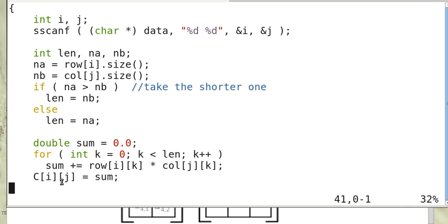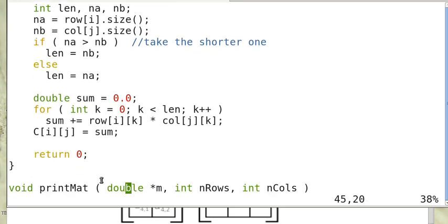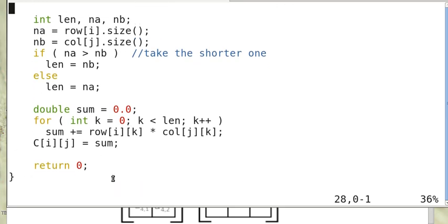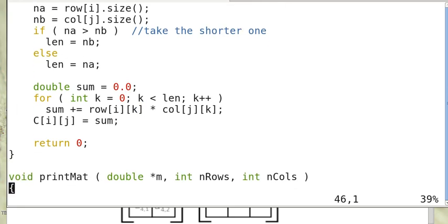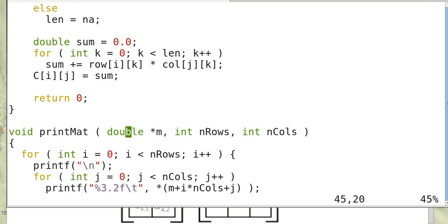And so the (i,j) element of C is equal to sum. So that's it. It's very simple, a dot product. And the print_mat is just to print out a matrix.